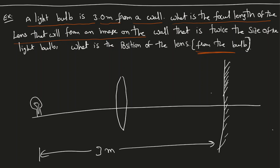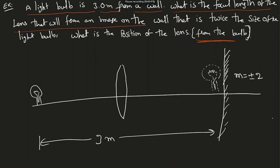Another important piece of data is the magnification — the bulb image is twice the size of the original object, so the magnification factor is plus or minus 2. I drew it upright, but it might be inverted — we'll figure that out. I'll take m = +2, solve for it, then take m = -2 and solve, and figure out which is the right answer.